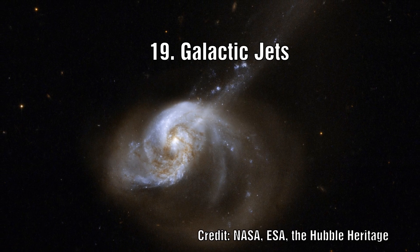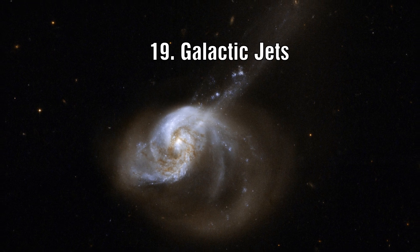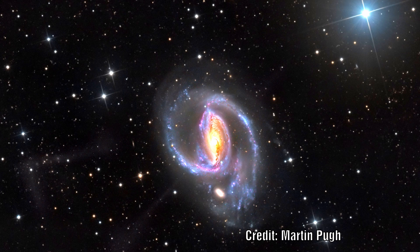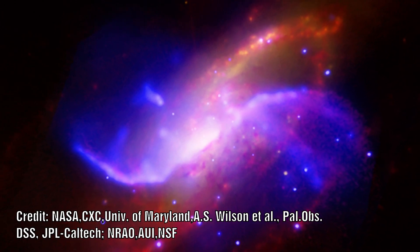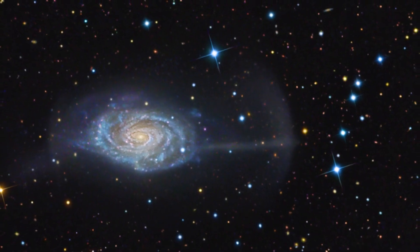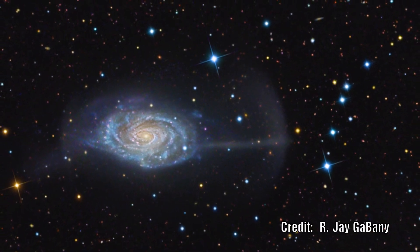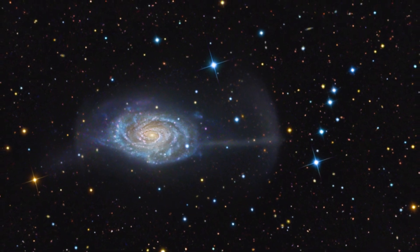Number 20: Do the peculiar jets out of galaxies play a crucial role in understanding this ejection process? When we examine some of these galaxies and look at the jets — and how some of these jets end at right angles — to me this suggests there are boundary conditions they are interacting with. This may hold a clue to understanding how these processes actually work.